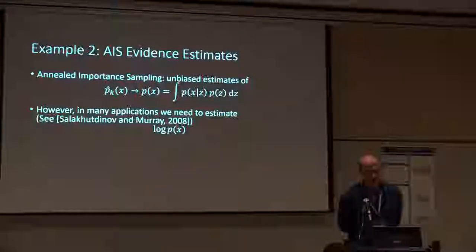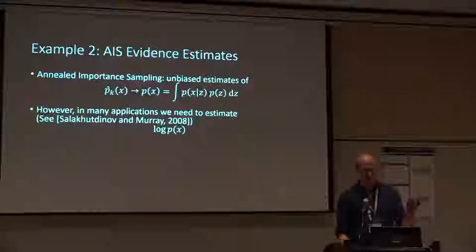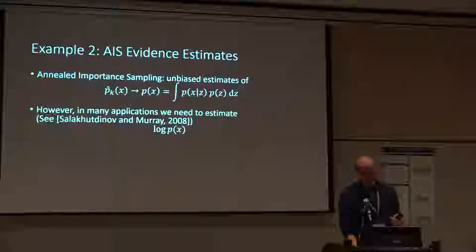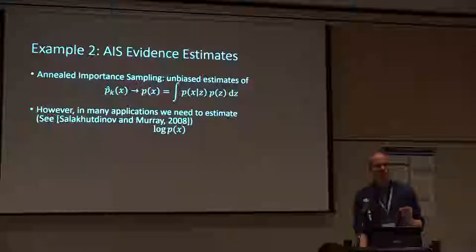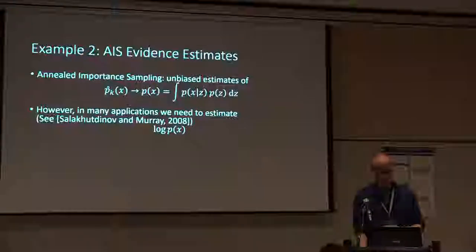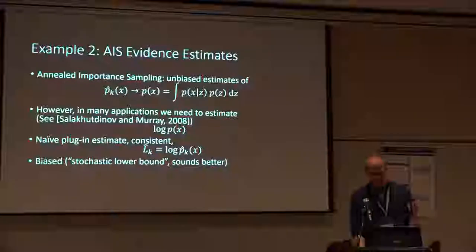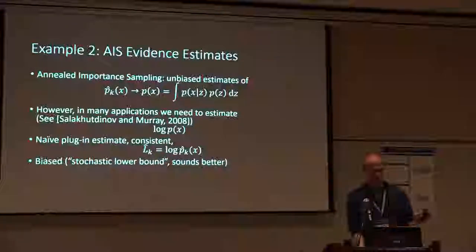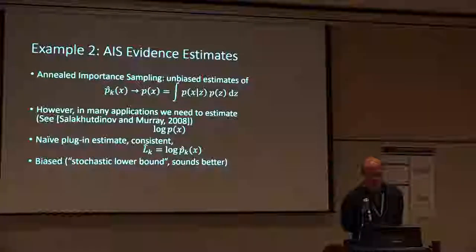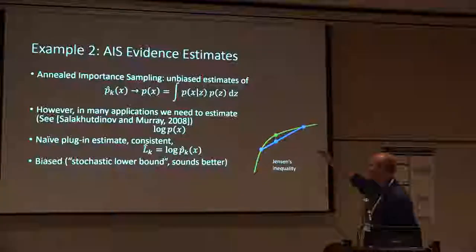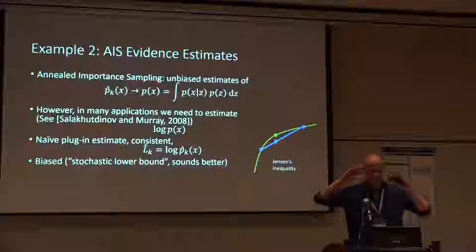In order to normalize, we take the empirical sum of all these weights that we have computed, the unnormalized ones. So this is asymptotically consistent. If we have a large number of particles, then this normalization doesn't really matter. But for any finite number of k, we have a bias on the order of 1 over k. Typically, in classic applications of importance sampling, it's restricted to low dimensions, and you can take tens of thousands of particles, and this bias doesn't matter. But for small k, you have that. Second example would be annealed importance sampling to compute the evidence.